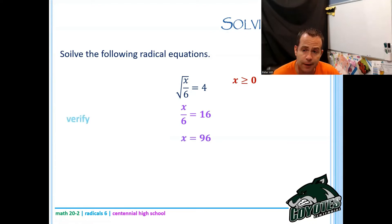Now I need to verify that. So I go back to my original. I plug 96 in for x. 96 divided by six is 16. The root of 16 is four. And so I have a statement that reads four equals four. I'm good to go. The answer is x equals 96.